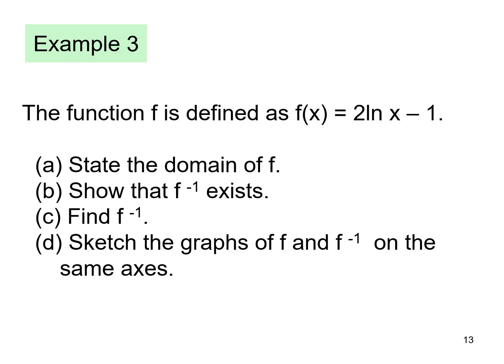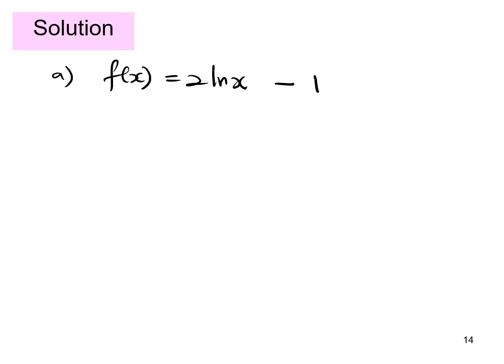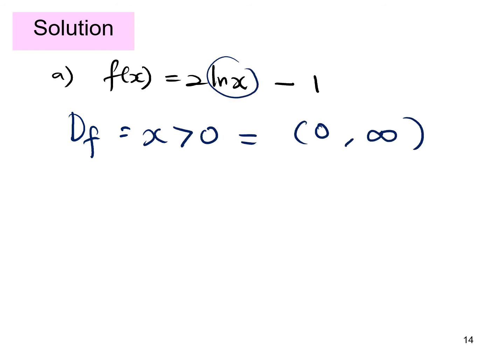Example 3: the function f is defined as f(x) = 2 ln(x) − 1. (a) State the domain of f, (b) show that f inverse exists, (c) find f inverse, and (d) sketch the graph of f and f inverse on the same axis. The domain of f: since it is a log function, the domain is x greater than zero, which is (0, ∞).